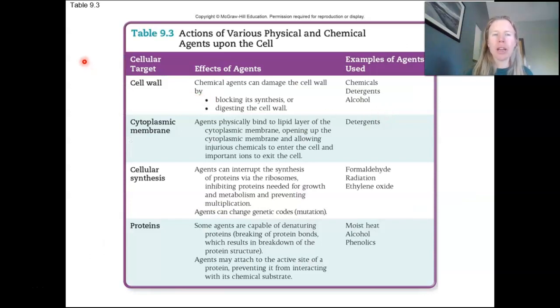And so what we're going to look at here is that we really have four main targets that we can use when we're taking a physical or chemical agent to try to kill our microbes here. So we can target the cell wall, the cell membrane, synthesis within the cell. So typically here we're talking about DNA synthesis, or RNA synthesis, and then the proteins themselves, their structure or their function.